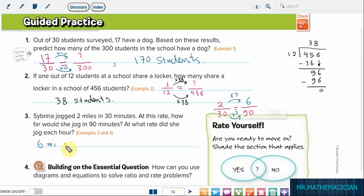Now let's discover the second part. At what rate did she jog each hour? Each hour means in 60 minutes. So let's go back to the first ratio again and we need to know now 2 out of 30 equals how many miles in 60 minutes. We multiplied down by 2, so you must multiply up by 2 as well.